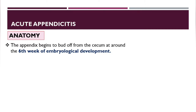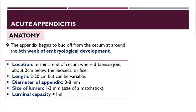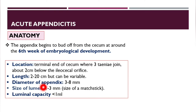The appendix begins to bud off from the cecum around the sixth week of embryological development. Its location is the terminal end of the cecum, where the taeniae join together, about two centimeters below the ileocecal orifice. Its length is from two to twenty centimeters, though variable. The diameter is three to eight millimeters, the lumen one to three millimeters, and the luminal capacity is usually less than one milliliter.